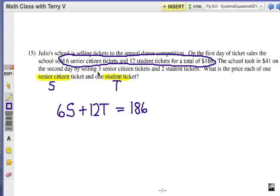Now the other one, we've got three senior citizen tickets and two student tickets for $41, right? So let's go with 3S plus 2T and that equals 41. Alright, not so bad.